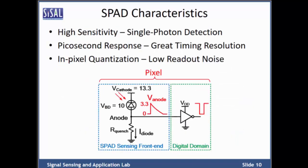This slide shows some important characteristics of SPAD. The first is high sensitivity, since the avalanche diode can be triggered by a single photon. The response time can be within tens of picoseconds, which gives great timing resolution. Another benefit is that the device is suitable for in-pixel photon quantization, which enables low read noise.